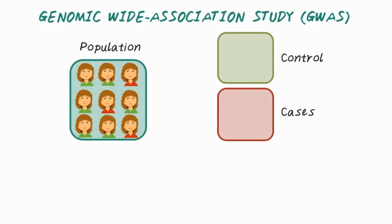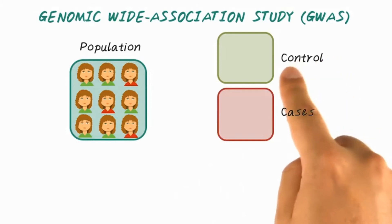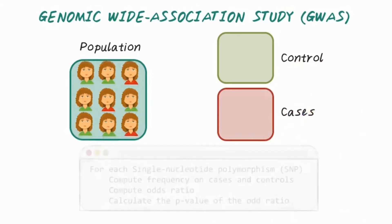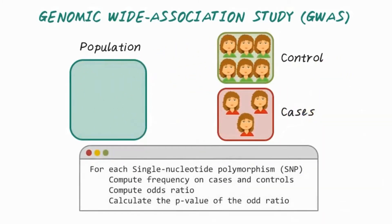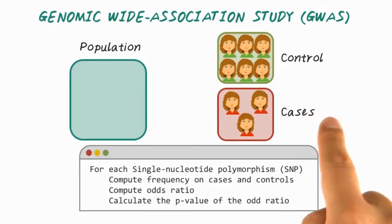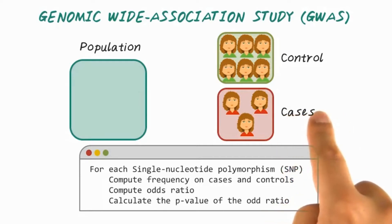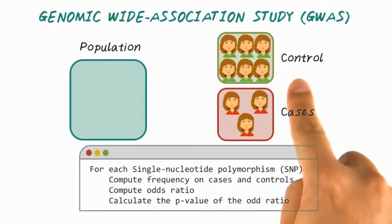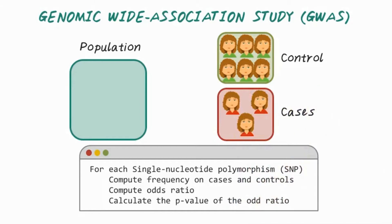How are genome-wide association studies conducted? To run a genome-wide association study, or GWAS, we first identify the disease phenotypes. Then we group the participants into two groups: cases, which are people with disease phenotypes, and controls, which are similar patients without the disease phenotype. Then we need to obtain DNA samples from all these participants.